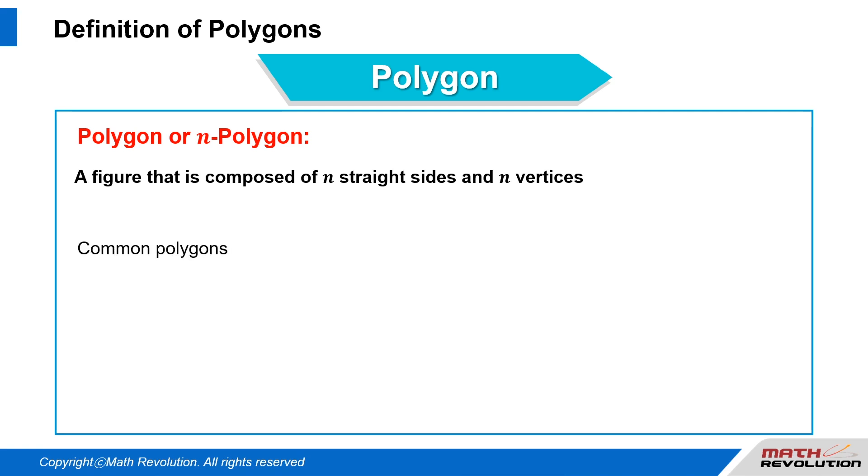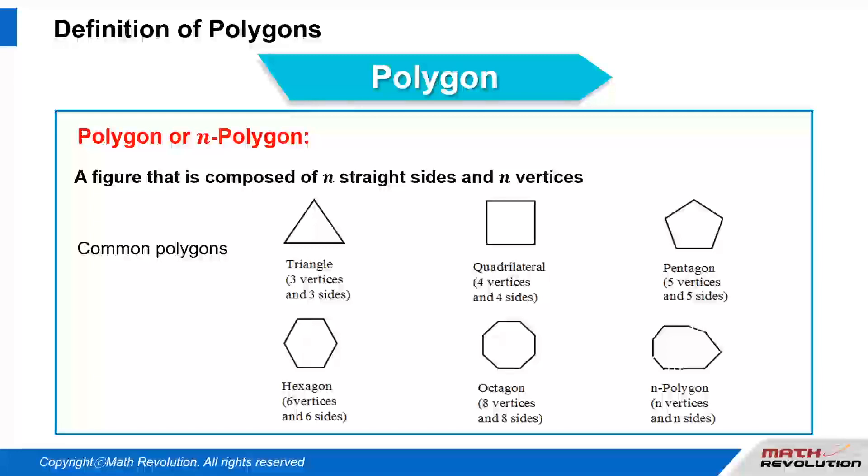Some common polygons are: Triangle (3 vertices and 3 sides), Quadrilateral (4 vertices and 4 sides), Pentagon (5 vertices and 5 sides), Hexagon (6 vertices and 6 sides), Octagon (8 vertices and 8 sides), and N-polygon (N vertices and N sides).